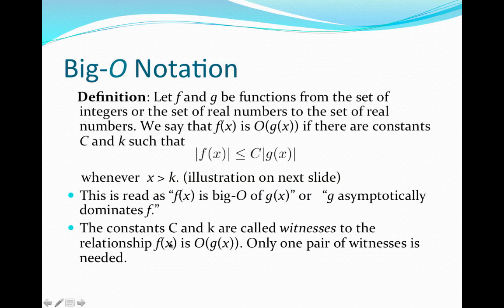So the constants c and k are called witnesses to the relationship that f of x is big O of g of x. And so in order to show that f of x is big O of g of x, we simply need to find a pair of witnesses, a value of c and k that has this property here. And we only need to find one pair of witnesses even though there are infinitely many.